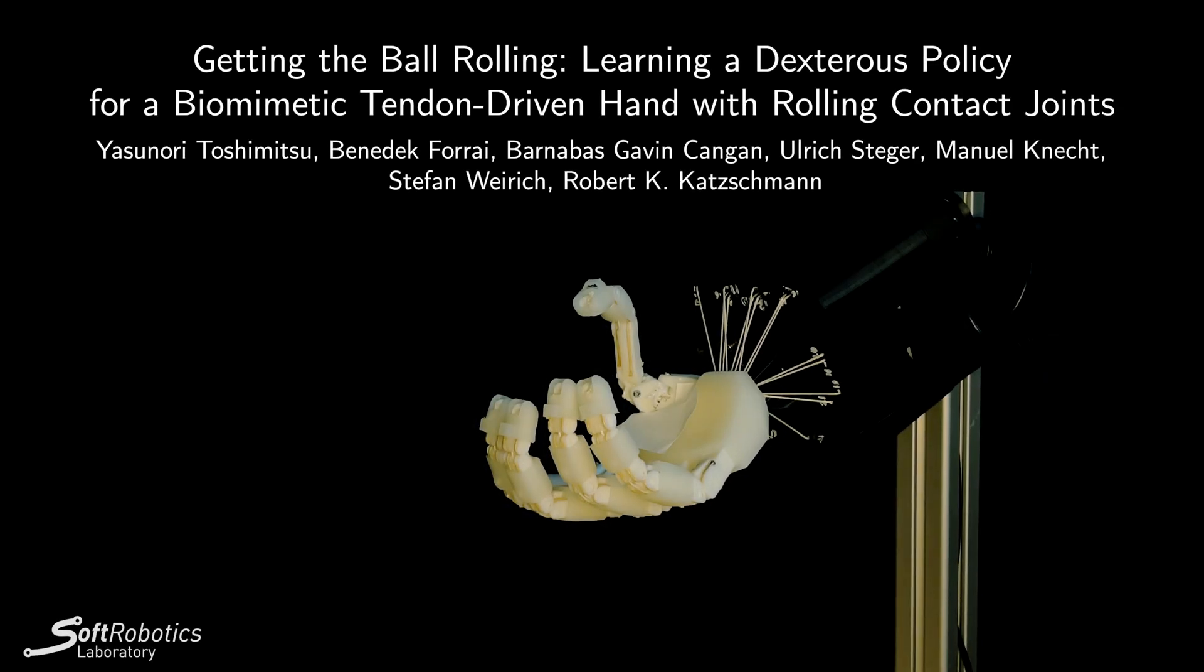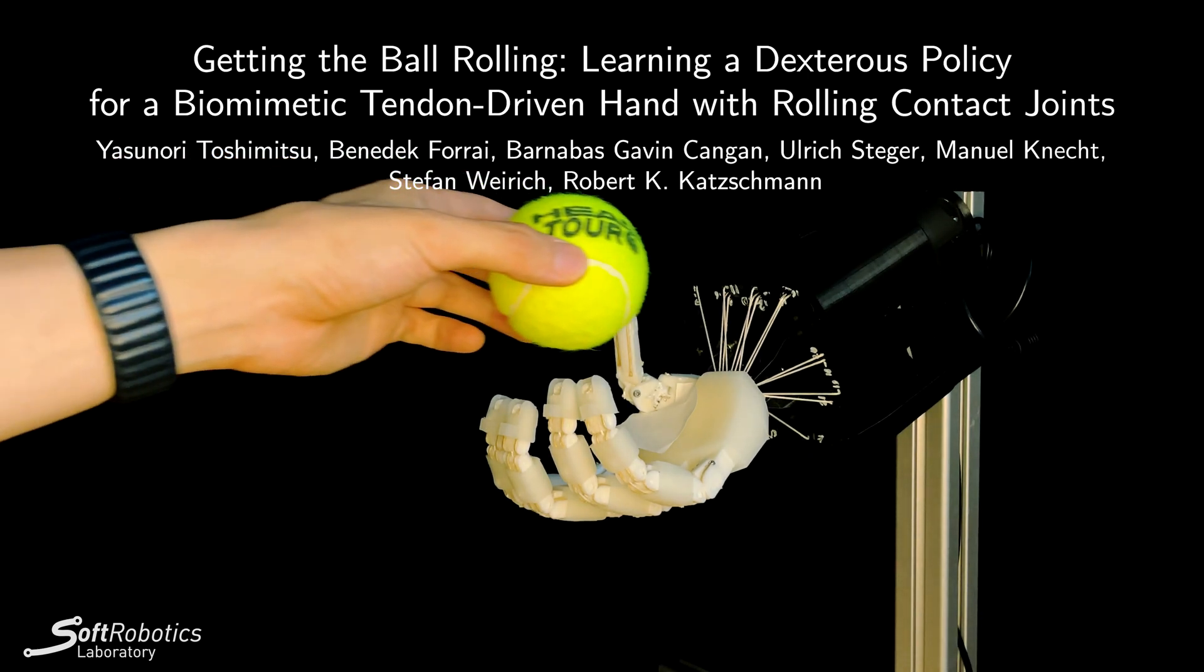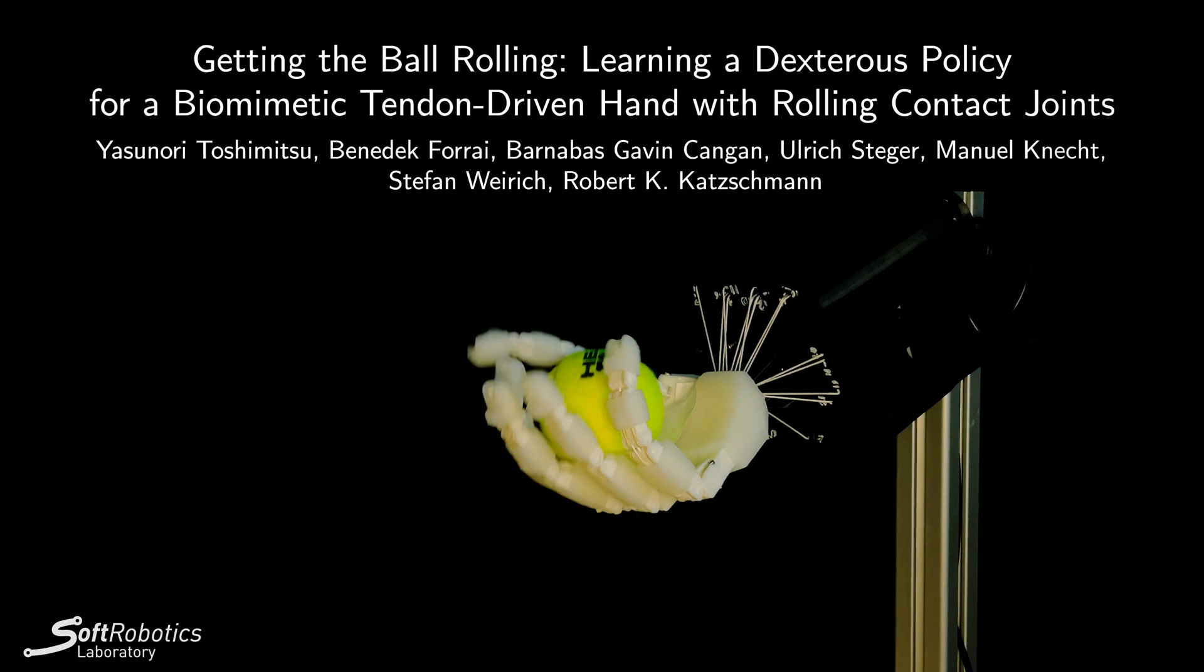We are from the Soft Robotics Lab at ETH Zurich and we present Getting the Ball Rolling, learning a dexterous policy for a biomimetic tendon-driven hand with rolling contact joints.